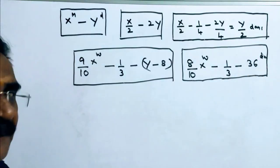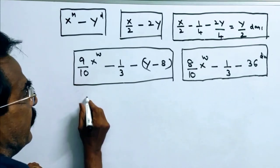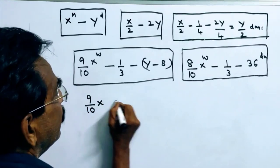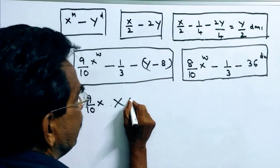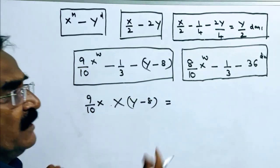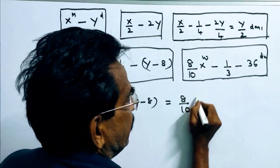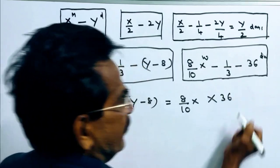Friends, this implies the work done by 9 by 10 X women in Y minus 8 days is equal to the work done by 8 by 10 X women in 36 days.